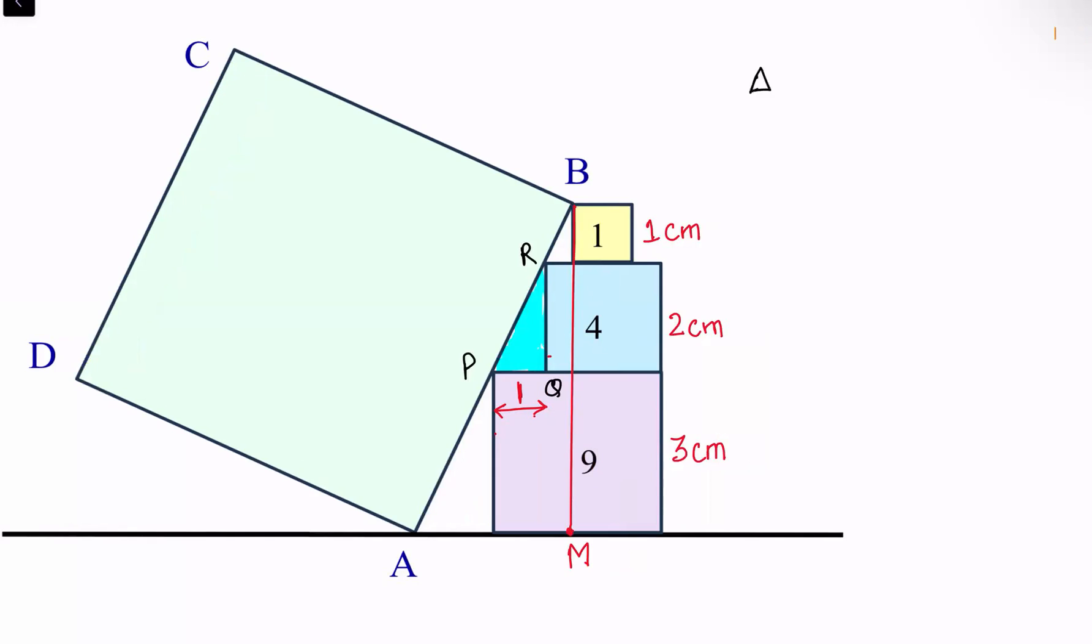Triangle PQR and triangle AMB both have this angle as 90°, so both are right-angle triangles. Also, these sides are parallel, and this length is nothing but a transversal, so these angles will become corresponding angles. The small blue triangle and the bigger triangle are similar to each other by angle-angle similarity.